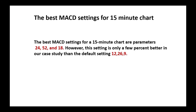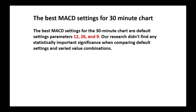What are the conclusions? The best MACD settings for the 15-minute chart are parameters 24, 52, and 18. However, these settings are only a few percent better in our case study than the default settings 12, 26, 9. This is normal — if you increase the periods a little bit, your system becomes more stable, like trading on a bigger time frame. You have fewer trades and because of that your profit is a little bigger. The same story applies to the 30-minute chart: there is no strong statistical evidence that other settings are much better than the standard default settings.